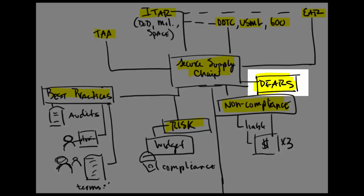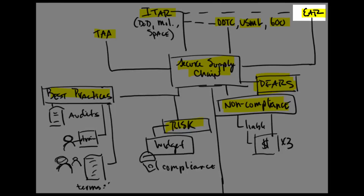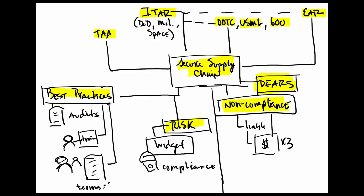DFARS is the acquisition regulation — a regulation that uses a lot of these terms we've talked about. EAR is essentially Department of Commerce. EAR really deals with all things — they focus on what's made in the USA, what was made by U.S. people, but they also cover foreign products as well. So it's anything that passes through the U.S. Department of Commerce. It's not really military-specific like ITAR is, but you need to be familiar with it.